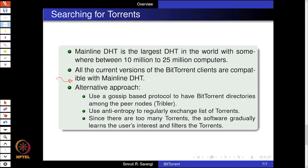BitTorrent has also expanded to use other kinds of protocols. For example, it uses a gossip-based protocol called Tribbler to synchronize BitTorrent directories among peer nodes. This is a gossip-based system where a directory of file names and servers is maintained and periodically exchanged as updates, using anti-entropy to regularly exchange the list of torrents — similar to what was discussed in the lecture on epidemic and gossip-based algorithms. Furthermore, since there are many torrents, the BitTorrent software gradually learns about the user's preferences and filters torrents to store those more aligned to the user's viewing preferences.